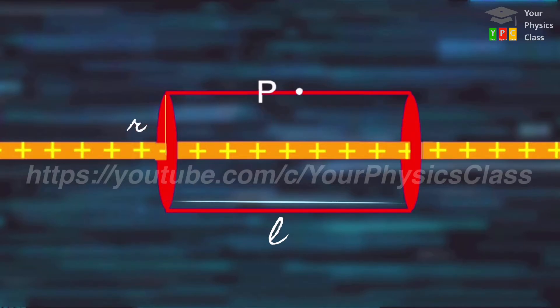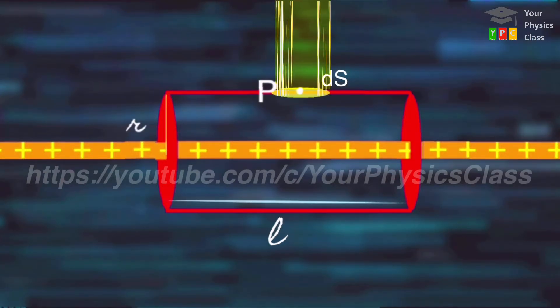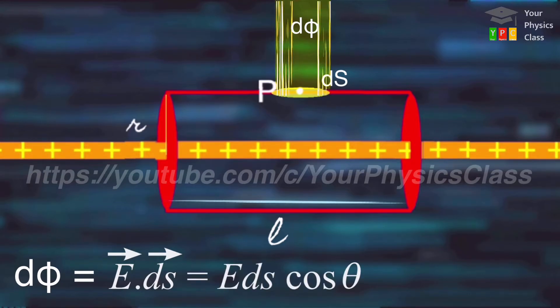As per method, let us take small area ds around P. Electric flux through ds is d phi equal to vector E dot vector ds, that is, E ds cos theta.